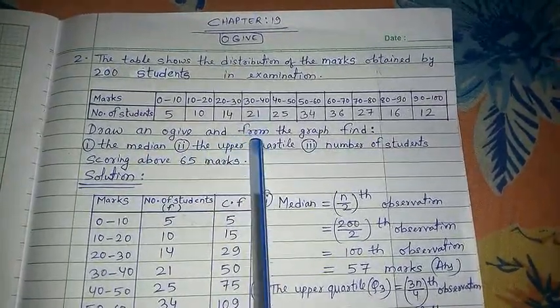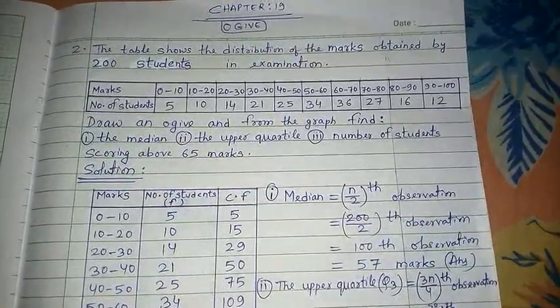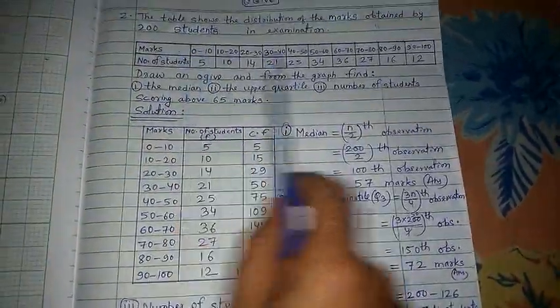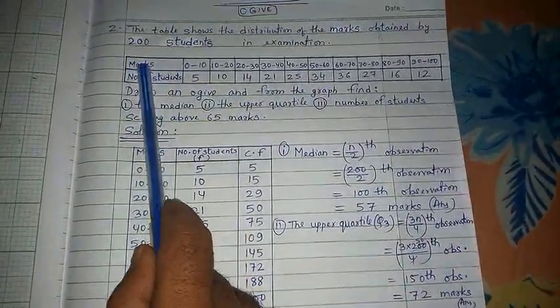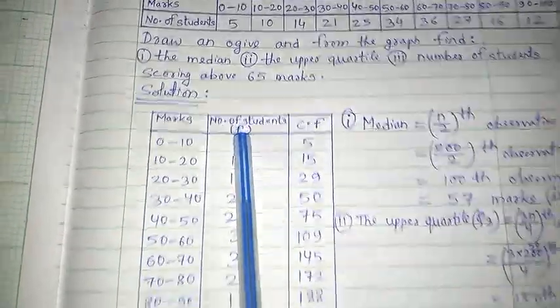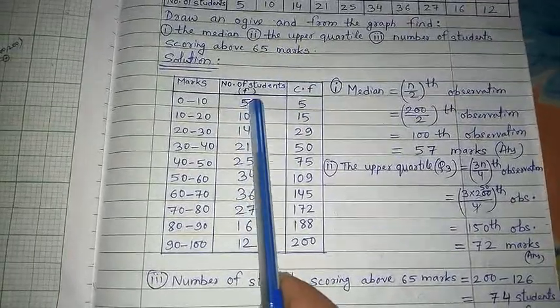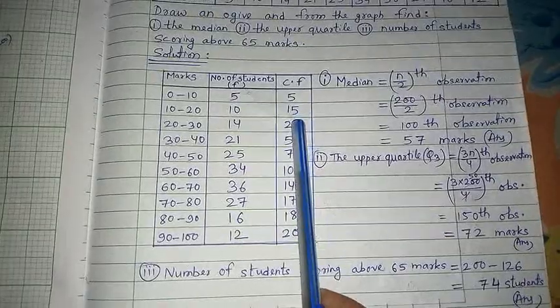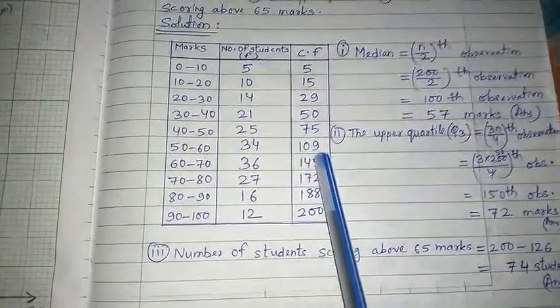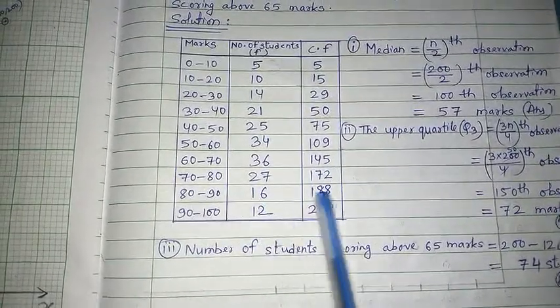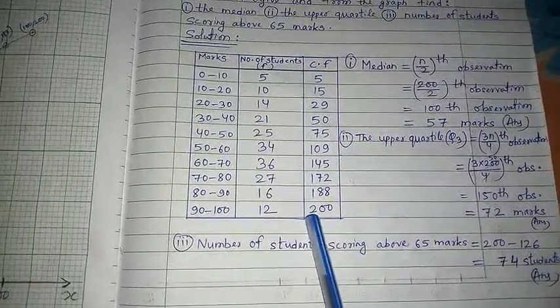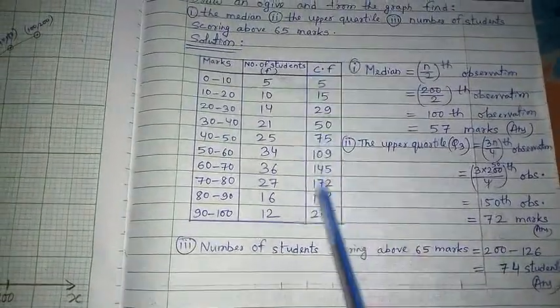Now draw an ogive and from the graph find the median. First we will draw the ogive. In the solution, if the question is in horizontal form, we make it vertical. The marks column came here, number of students came in the second line. Write number of students as F here, and this is CF, cumulative frequency. This 5 is the same here. Now 5 plus 10 is 15, 15 plus 14 is 29, 29 plus 21 is 50, 50 plus 25 is 75, 75 plus 34 is 109, 109 plus 36 is 145, 145 plus 12 is 157, 157 plus 15 is 172, 172 plus 16 is 188, 188 plus 12 is 200.